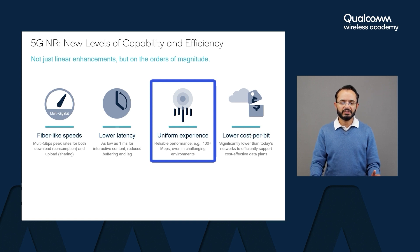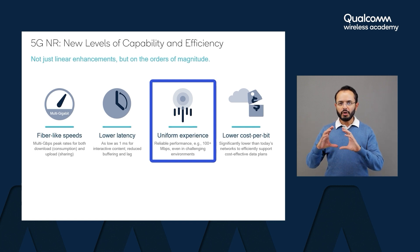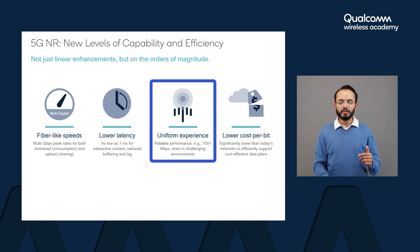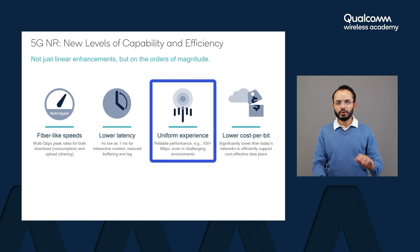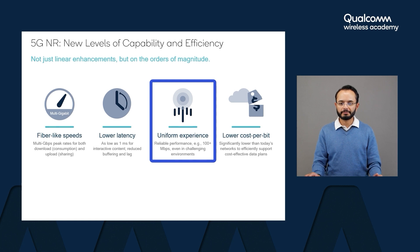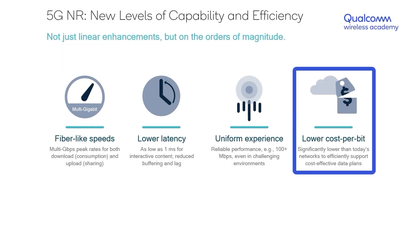In short, 5G has been designed not just for a few users who are in impeccable network conditions, but rather to provide a more uniform experience in a democratized manner to all users, regardless of where they are in the network. Ultimately, cost per bit is an important metric that network operators have to keep in mind — it is essentially how much money it costs them to bring one bit of data from an application server to you.